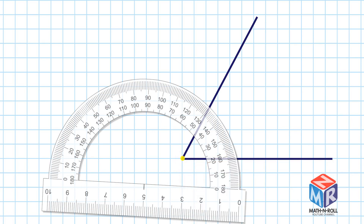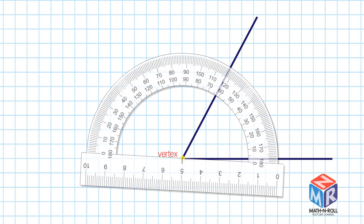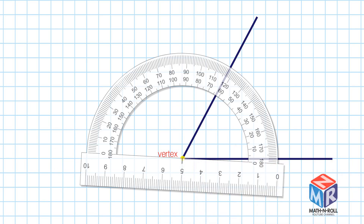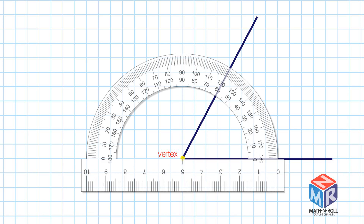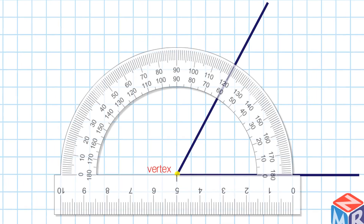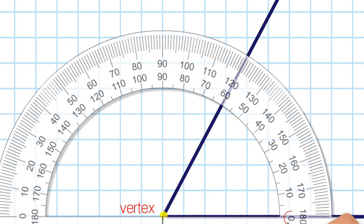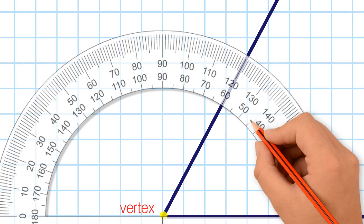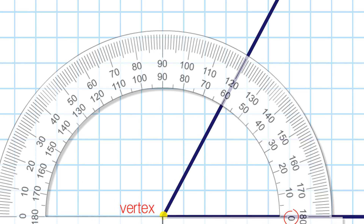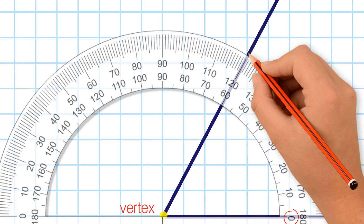Line up the vertex of the angle at the center point of the protractor. Make sure the bottom ray of the angle goes through the zero. Count up from zero until the other ray intersects. This is the measurement of your angle.